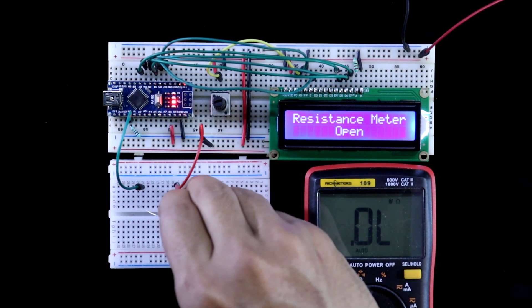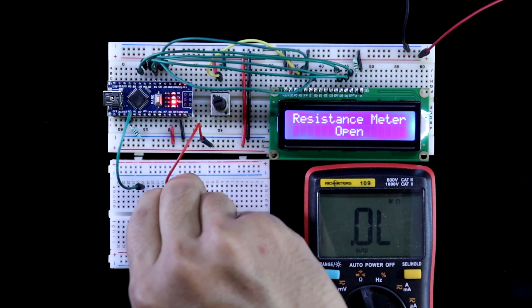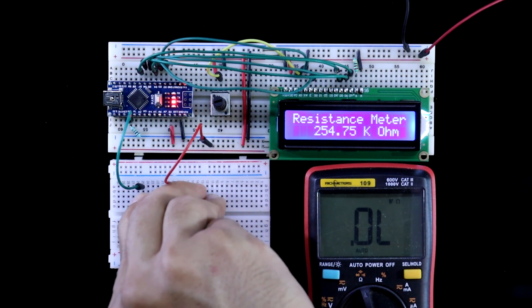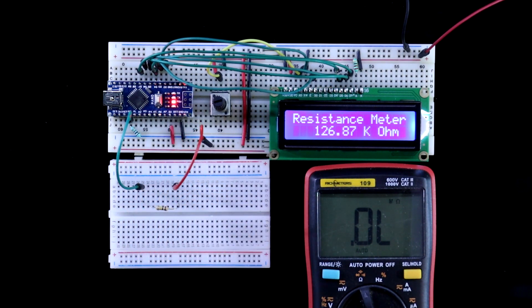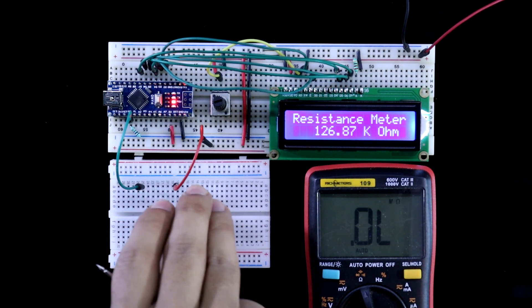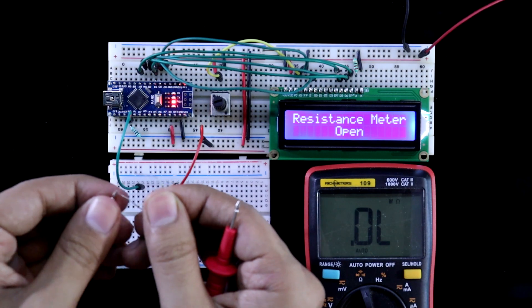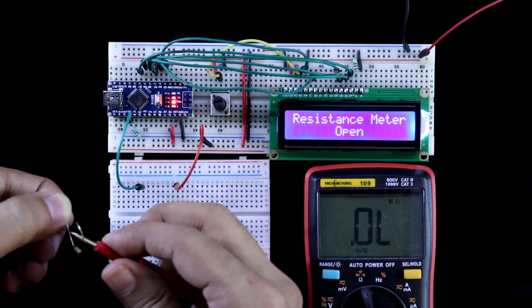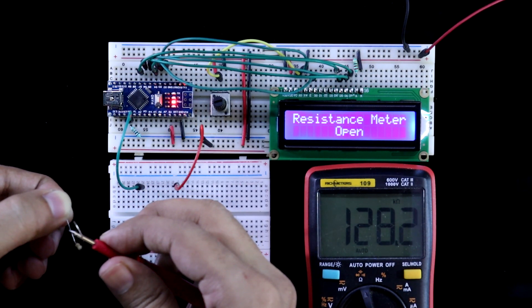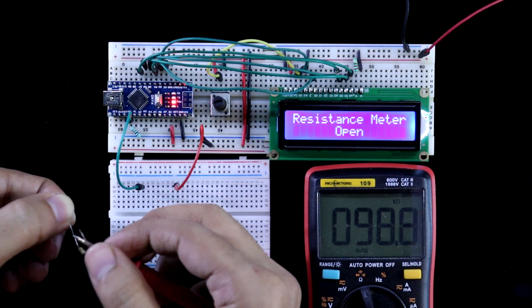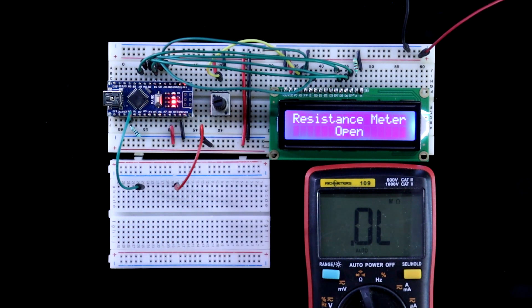If you measure the 100 kilo ohms resistor, it is 126 kilo ohms. But with the multimeter, measure 98 or 99 kilo ohms. This value is not under the 5% accuracy.